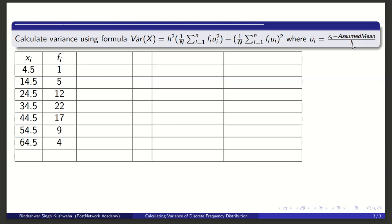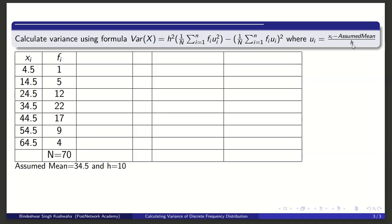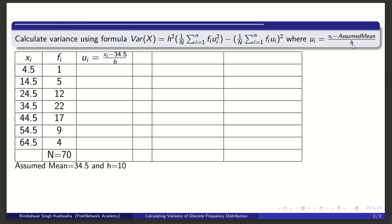See that observations xi and frequencies fi are given. Now if you add all frequencies, you will get 70. The assumed mean is 34.5 and h is 10.